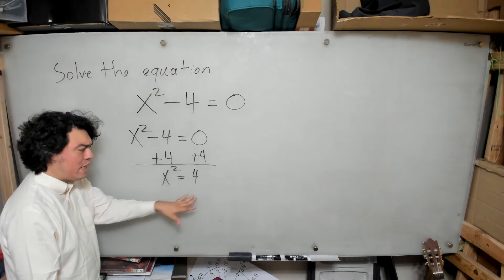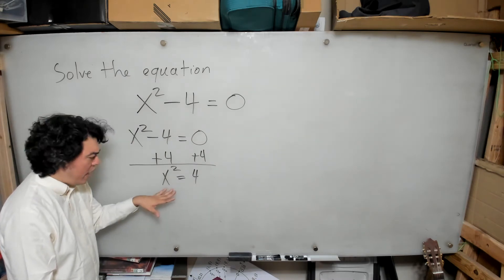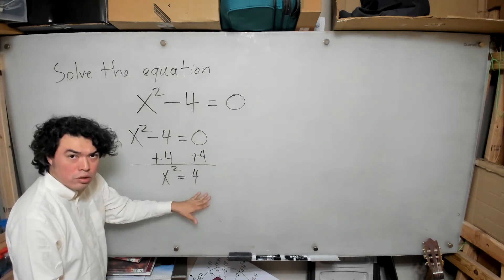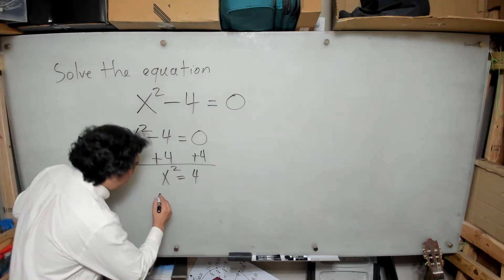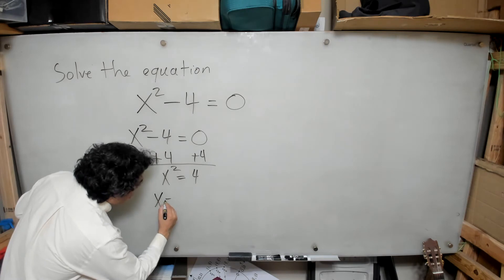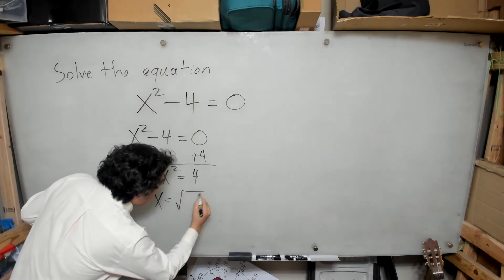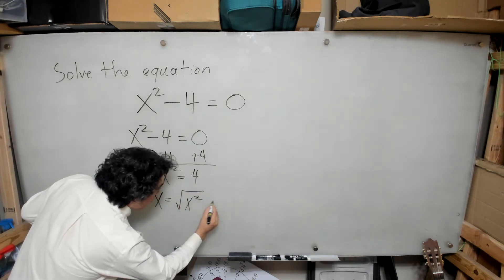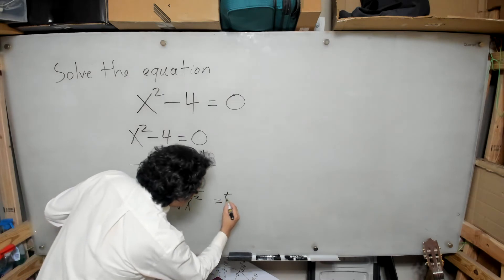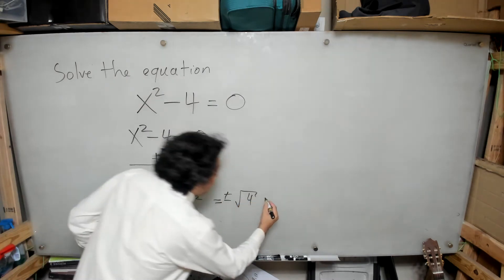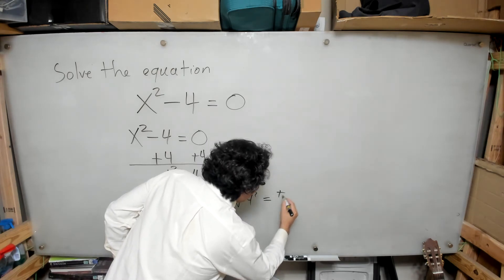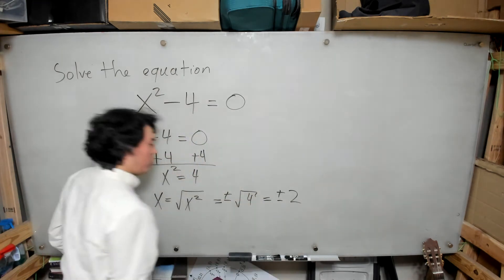But you can see now, I'm perfect. I have x squared equals 4. So what I'm going to do is take the square root of both sides, as we did before. So x equals the square root of x squared, which is going to be plus minus the square root of 4, which will be finally, plus minus 2.